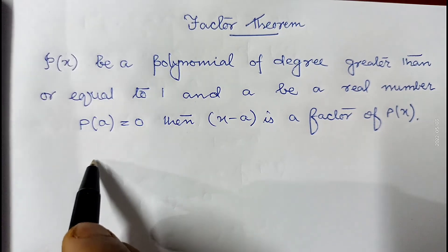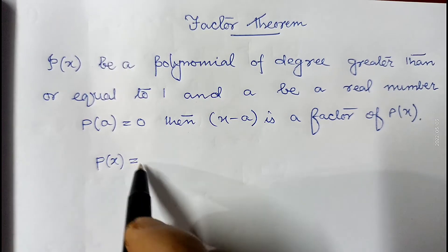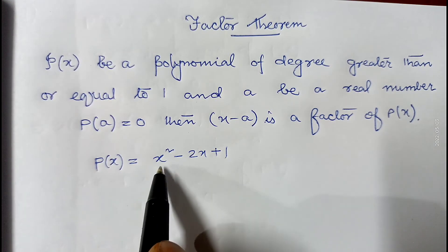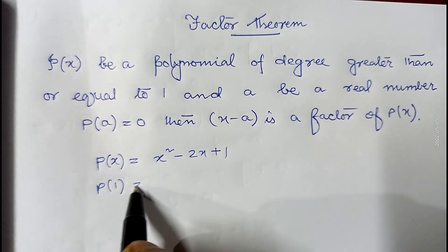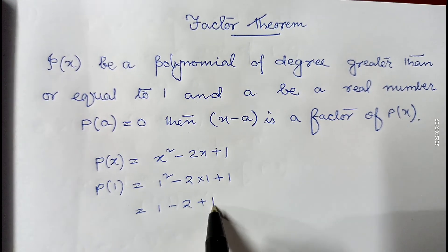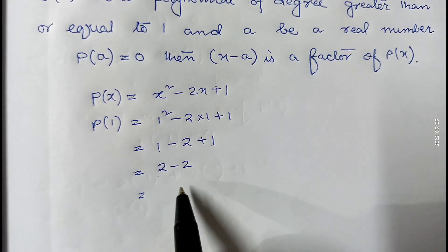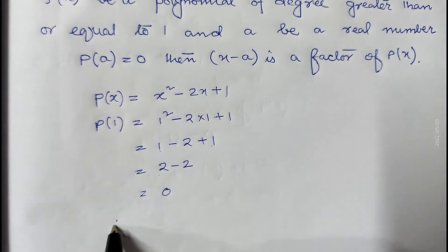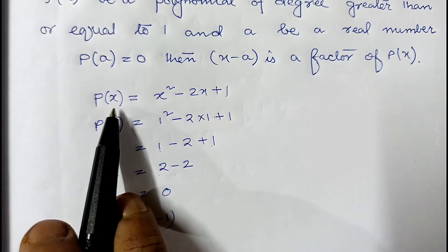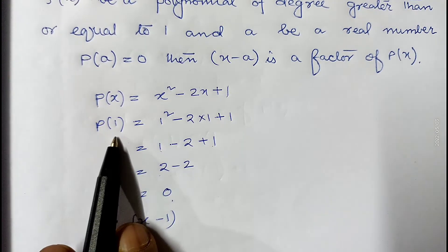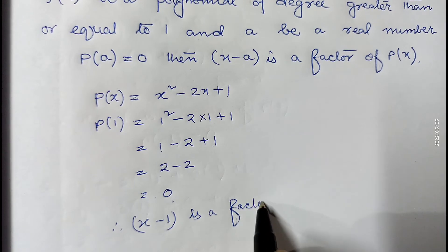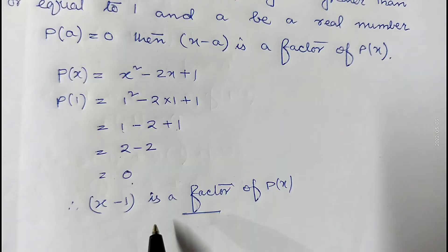Let me give one example to make this clear. Suppose p(x) equals x squared minus 2x plus 1. This is a polynomial of degree 2. If I replace x by 1, it will be 1 squared minus 2 into 1 plus 1, which gives 1 minus 2 plus 1, that is 2 minus 2, which equals 0. Since p(1) equals 0, therefore x minus 1 is a factor of p(x). By replacing x by 1 we got 0, so x minus 1 is a factor of the given polynomial.